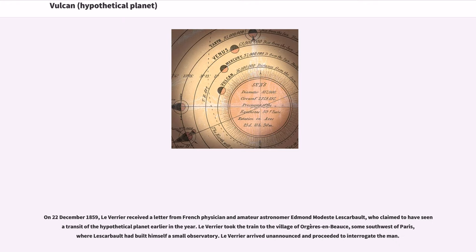On December 22, 1859, Le Verrier received a letter from French physician and amateur astronomer Edmond Modeste de Lascarbalt, who claimed to have seen a transit of the hypothetical planet earlier in the year. Le Verrier took the train to the village of Orgières-en-Beauce, some southwest of Paris, where Lascarbalt had built himself a small observatory. Le Verrier arrived unannounced and proceeded to interrogate the man.